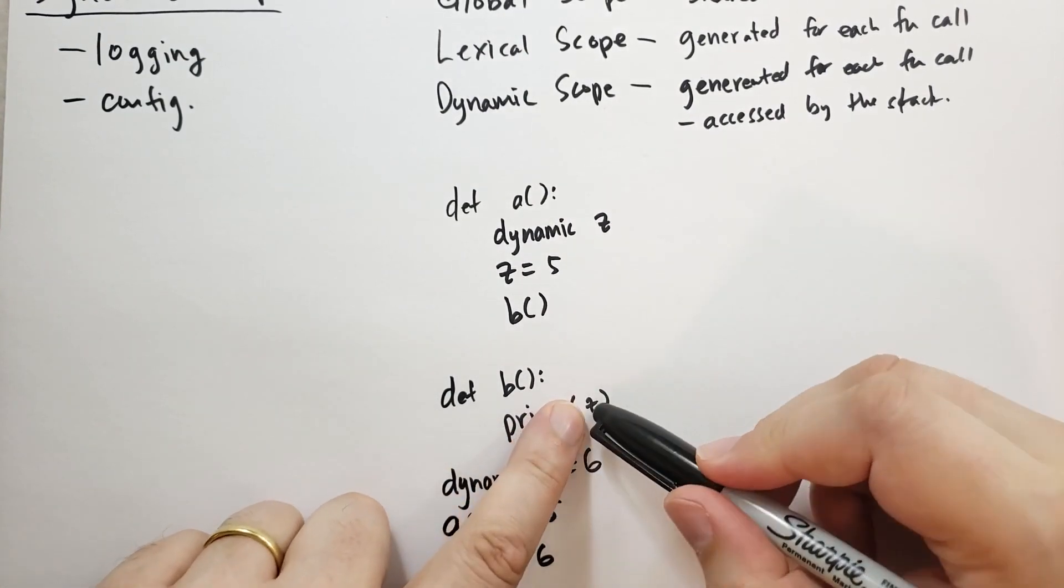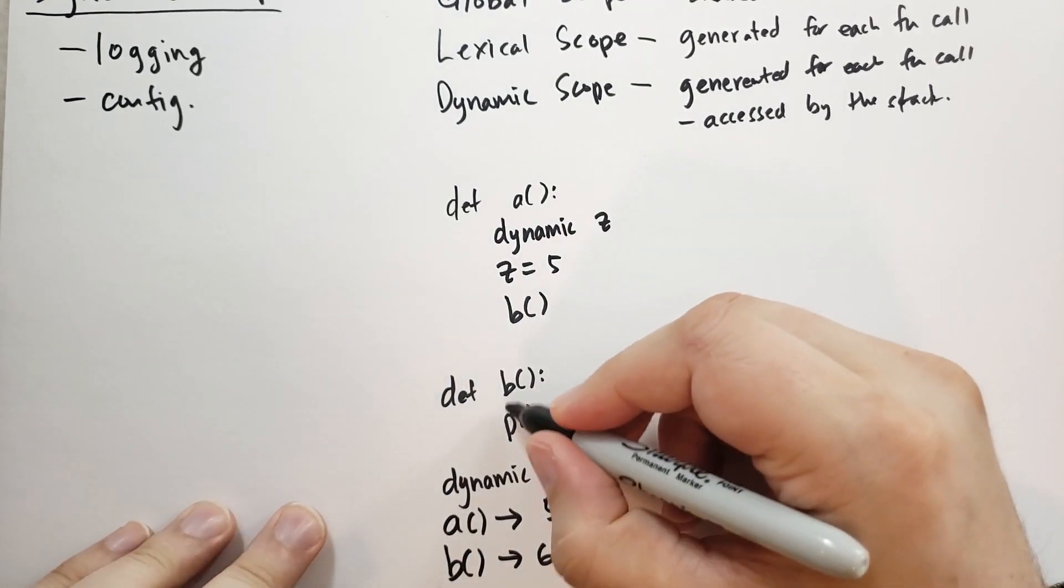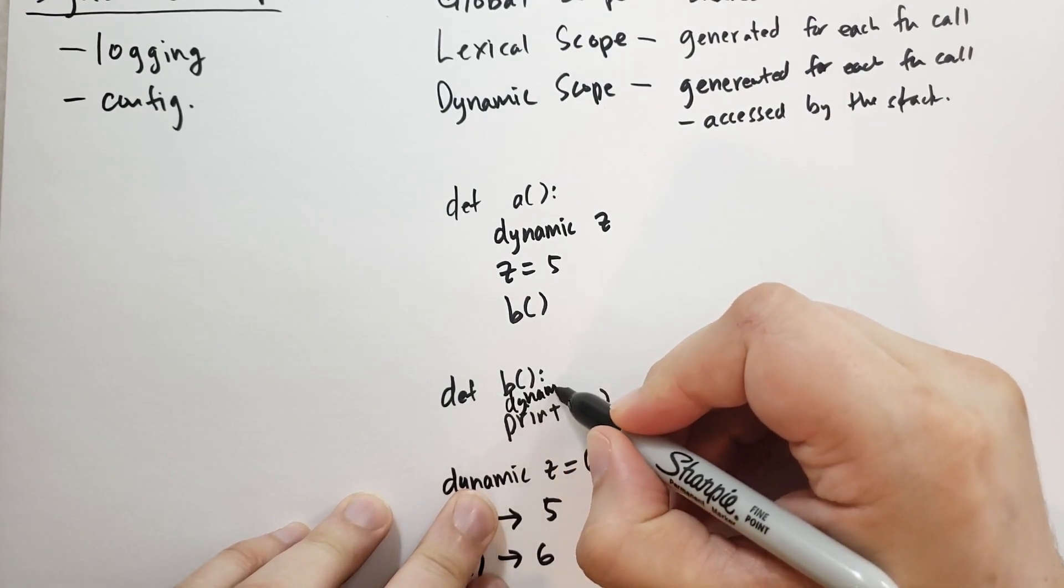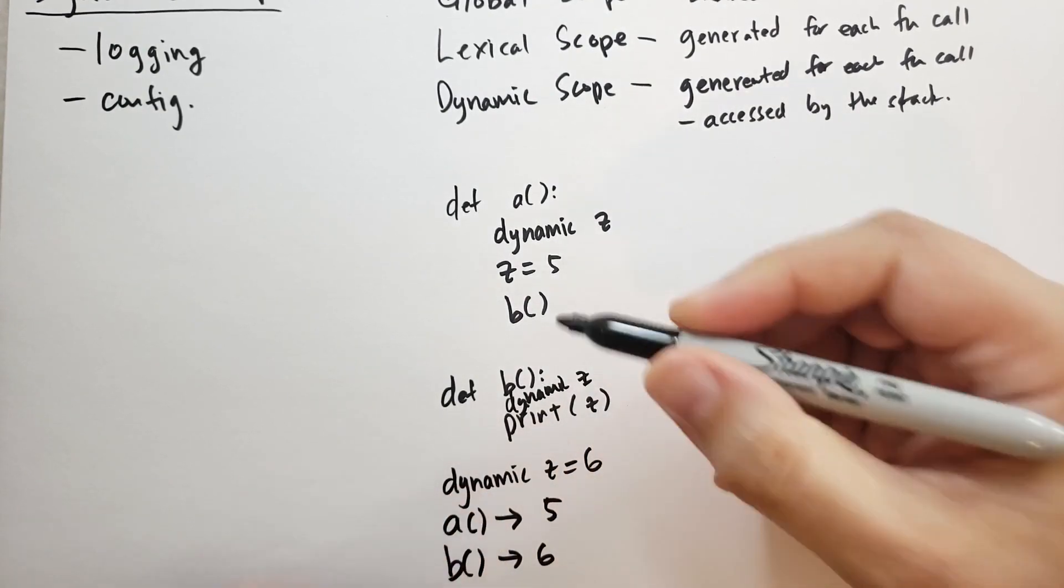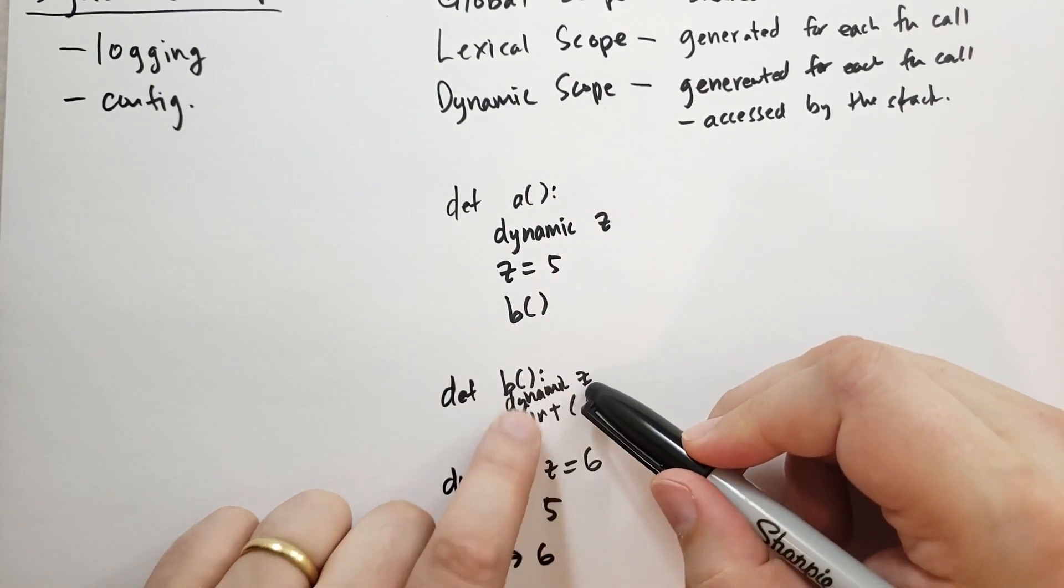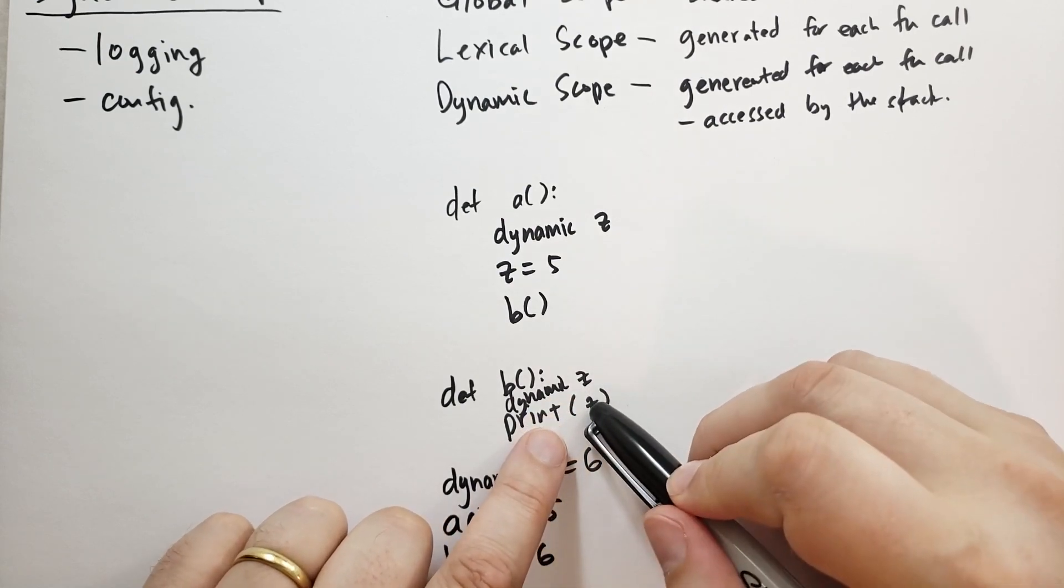the variable is looked at based on the call stack. You might even need to say something like dynamic z here as well in order for Python to understand. So when you're calling b, it says print the z, but don't look for z in the lexical scope. Don't look for z in the global scope. Look for z in the dynamic scope.